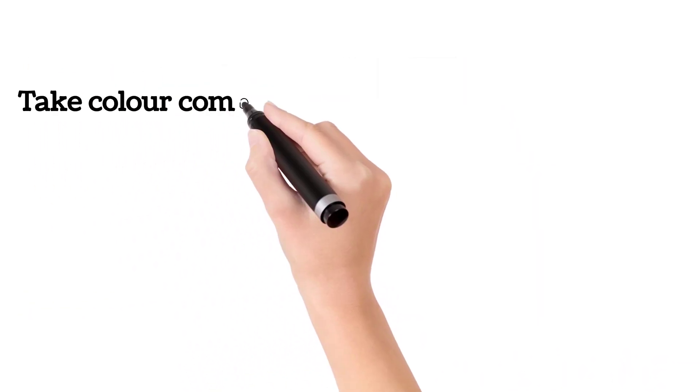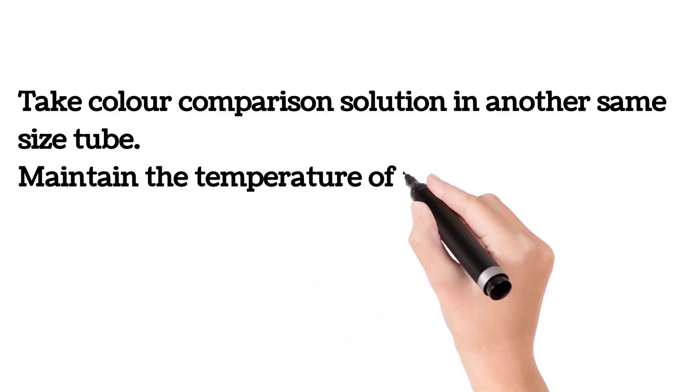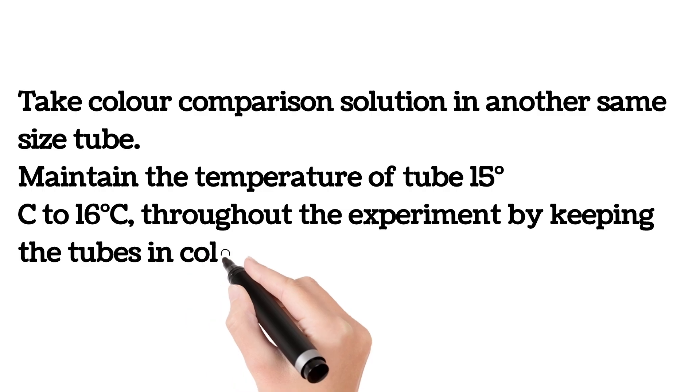Take color comparison solution in another same size tube. Maintain the temperature of tube at 15 degrees Celsius to 16 degrees Celsius throughout the experiment by keeping the tubes in cold water bath.